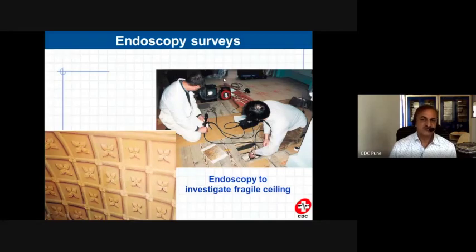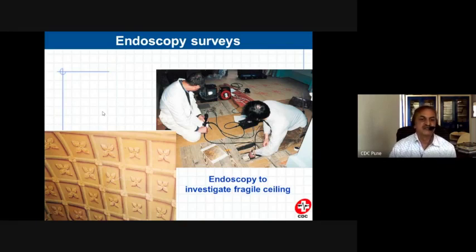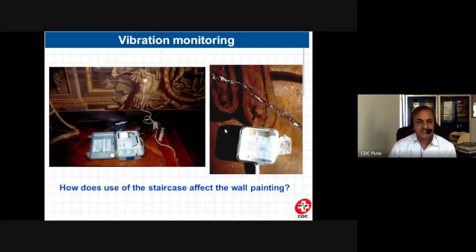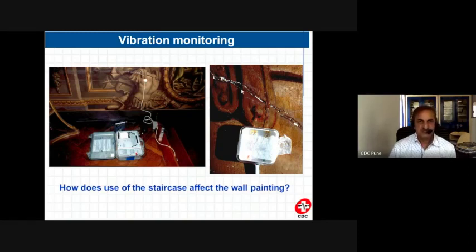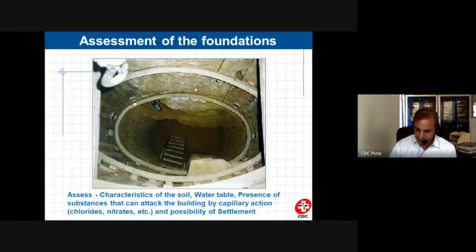Endoscopes are also used when there is a false ceiling or false flooring — we don't know what structural member or system is behind it. Using endoscopes or borescopes, we can take videos and photos and map the structure. Vibration monitoring is also often required because vibrations from many sources create a lot of issues. By monitoring vibrations we can identify what force is creating them, where they are coming from, and how to tackle them.